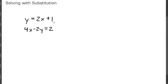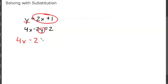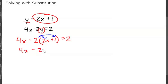Now say we have the system y equals 2x plus 1 and 4x minus 2y equals 1. Since y is already solved for, we plug 2x plus 1 in for y in the second equation: 4x minus 2 times (2x plus 1) equals 2. Our next step is to distribute the 2 to both terms.